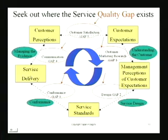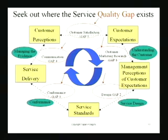Then from service delivery to customer perception: I offered the service or the bundle of product and service, but the customer when he received it had a certain perception. He was expecting something and now he is perceiving the quality of what I have offered. If there is a gap between what I deliver and what he perceives it to be, that is gap number four — a matter of whether I have communicated properly so his perceptions are correct.